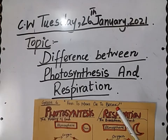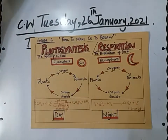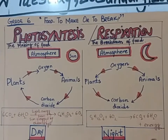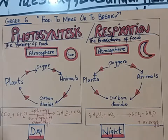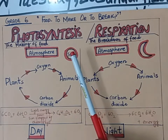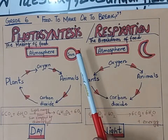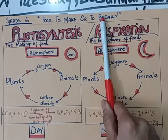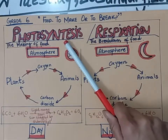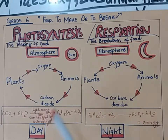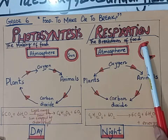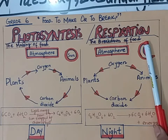Here I have drawn a diagram to show the difference between the photosynthesis and the respiration process during the day and the night. First of all, what is photosynthesis? Photosynthesis is actually the making of food. Our chapter is 'food to make or to break,' so the first process is photosynthesis — the making of food — and the second is respiration, which is the breakdown of food.